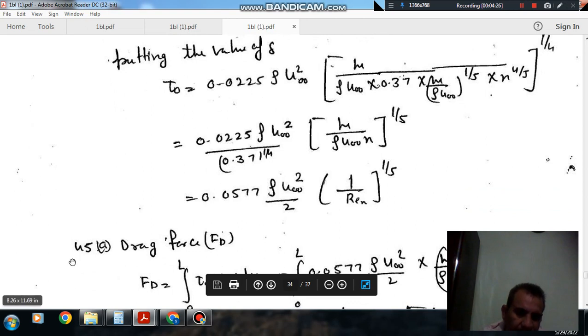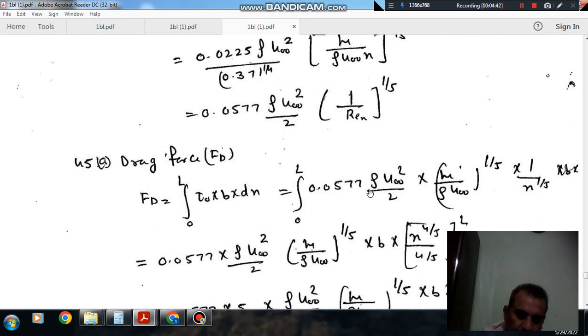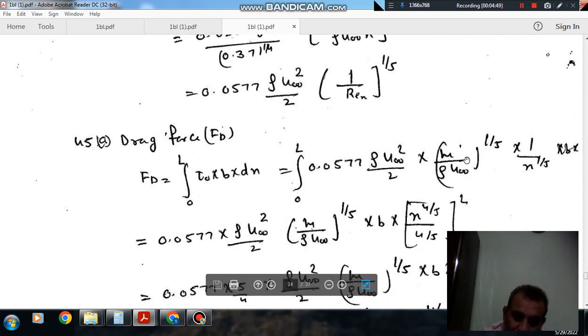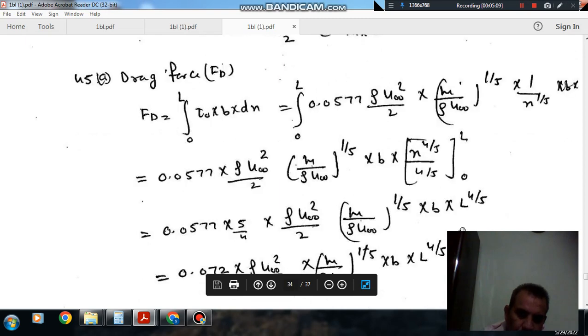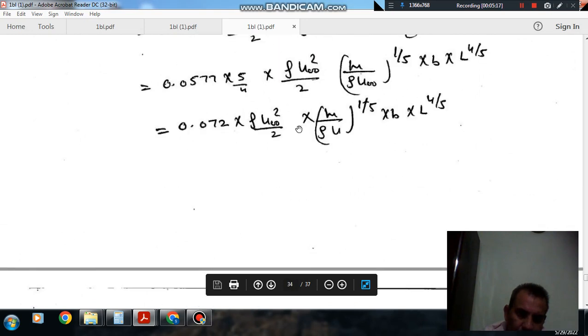Now the drag force can be found by a similar method as we have found in the laminar boundary layer, that is integral of tau_0 b dx from 0 to L. We integrate it, the only variable is x raised to minus 1/5. It will be x^(4/5) divided by 4/5 from 0 to L. Drag force will be 0.072 rho u_infinity squared times the remaining terms.